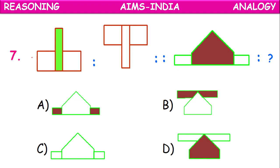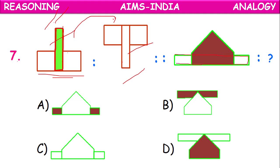Next challenge, seventh question: A rectangle with a bar pointing upward that is shaded. In the second diagram, the bar points downward and is unshaded. Similarly, for the third object, a horizontal bar pointing upward and shaded — it should point downward and become unshaded. Option B is the correct answer.